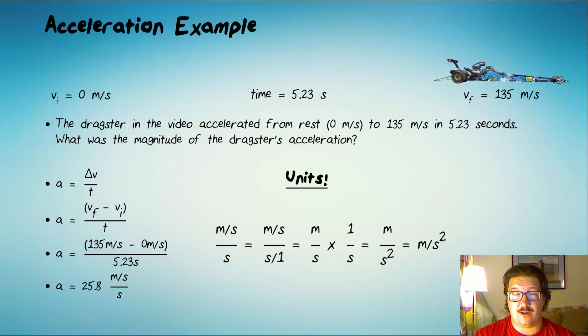The units we'll usually see for acceleration are meters per second squared. But I like meters per second per second because it kind of describes more what happened. So the dragster started off at zero meters per second. And then each second, it gained 25.8 meters per second of velocity. So after one second, it was going 25.8 meters per second. After two seconds, it was going 51.6 meters per second. And you could just keep adding 25.8. Well, at least five times.